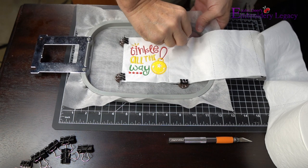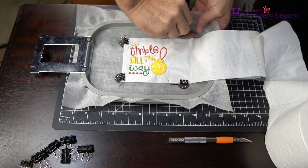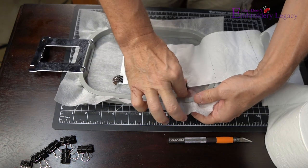For step four, we are going to very carefully remove the clips that are holding our toilet paper in place.